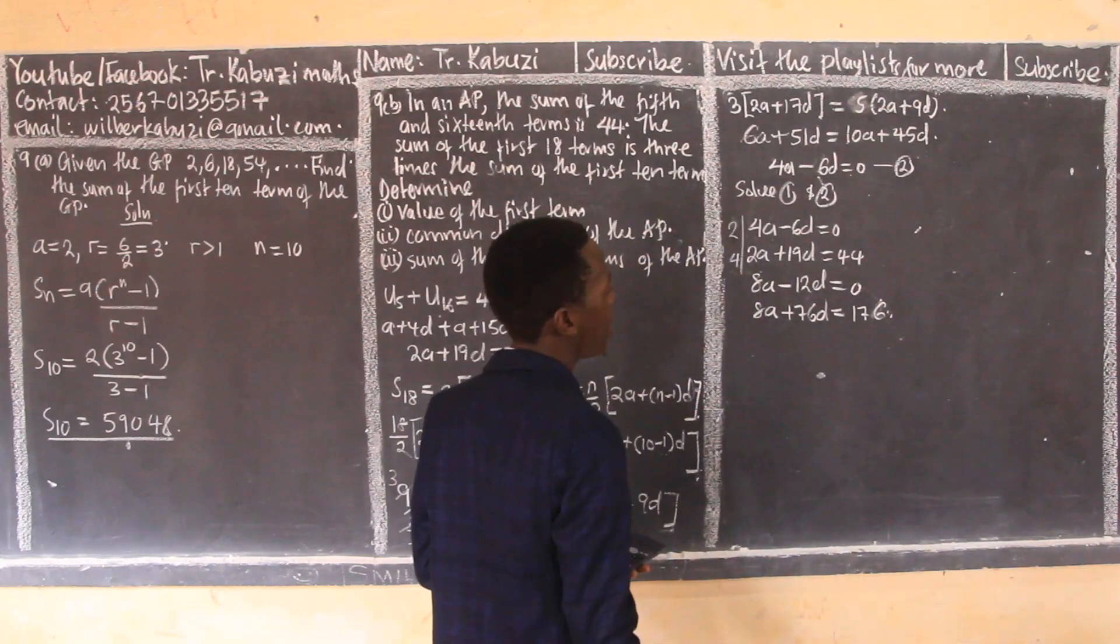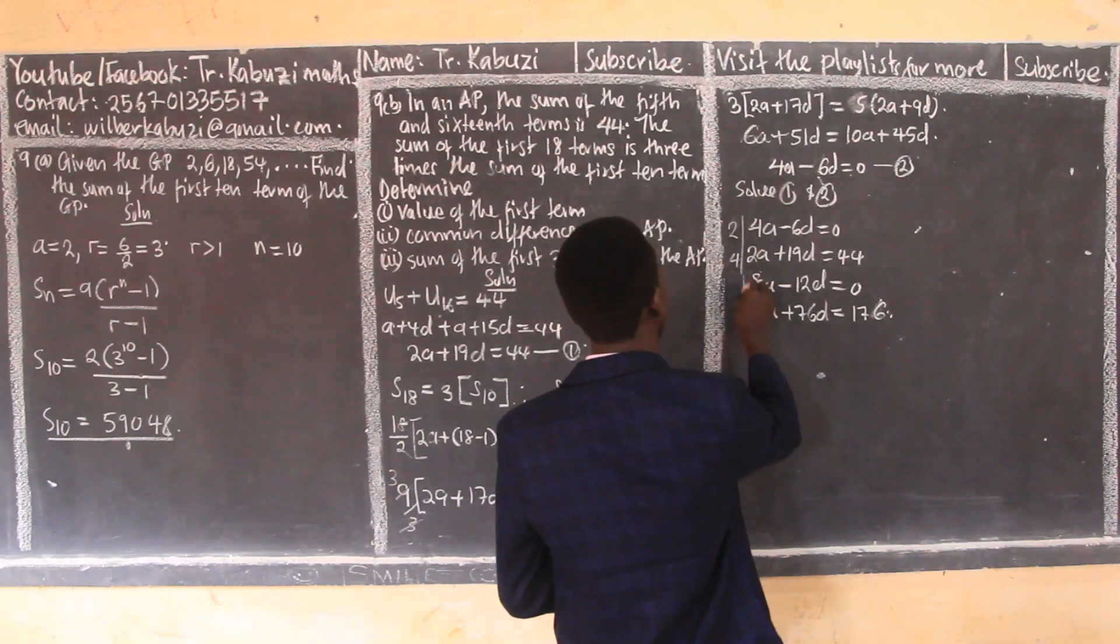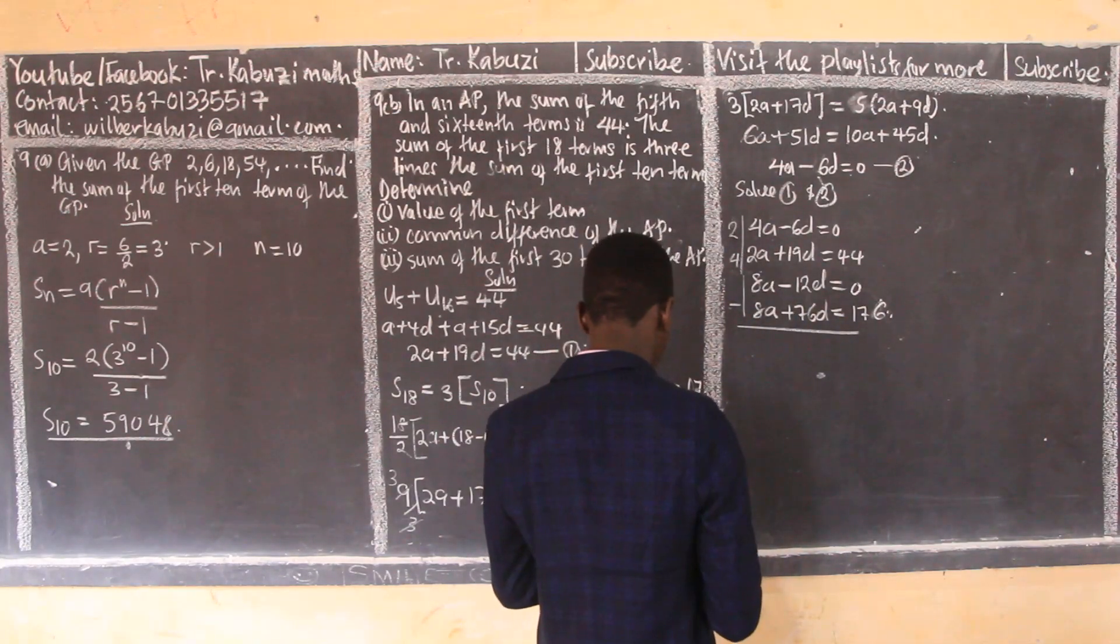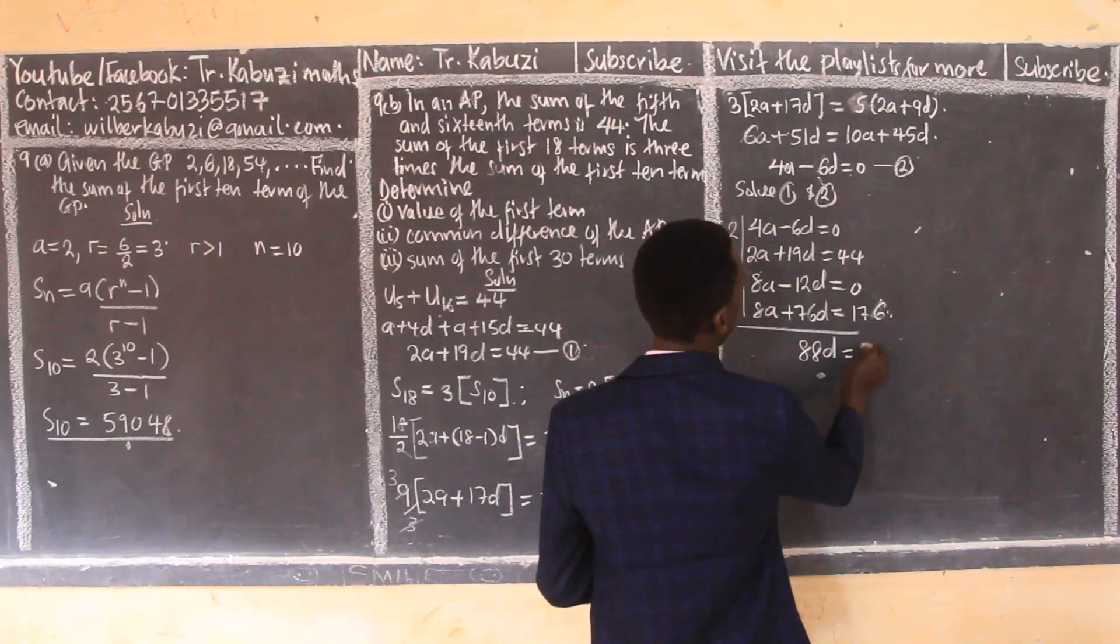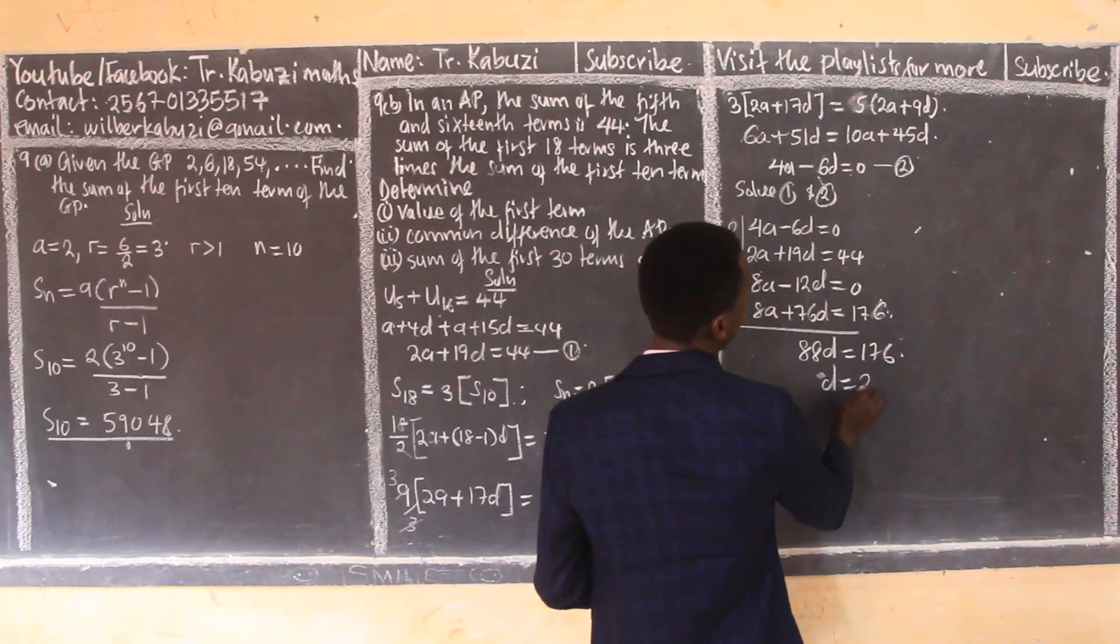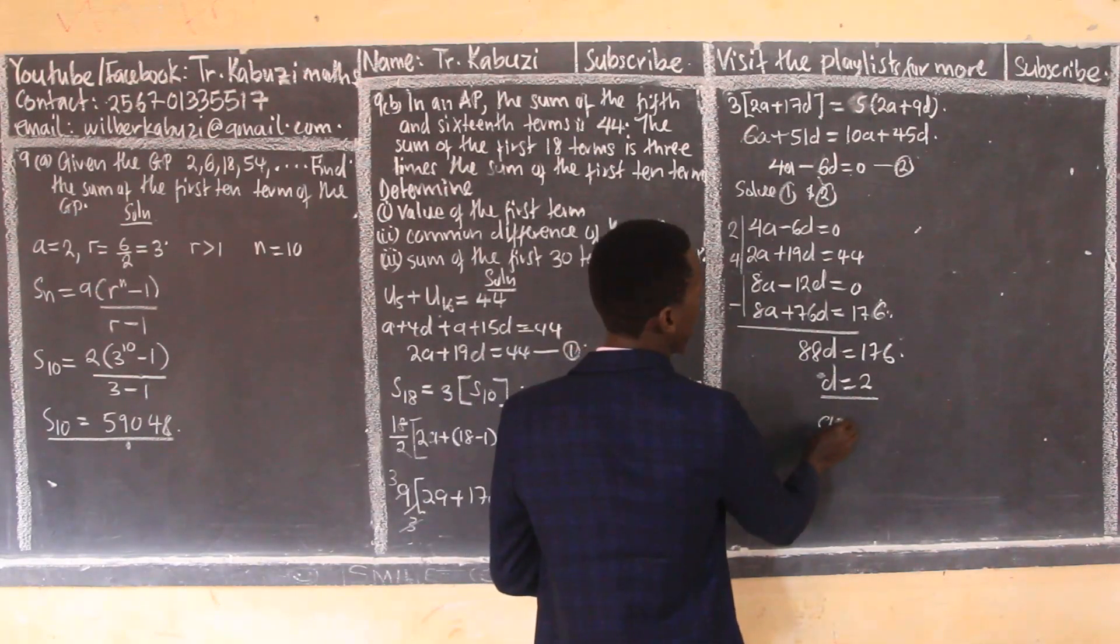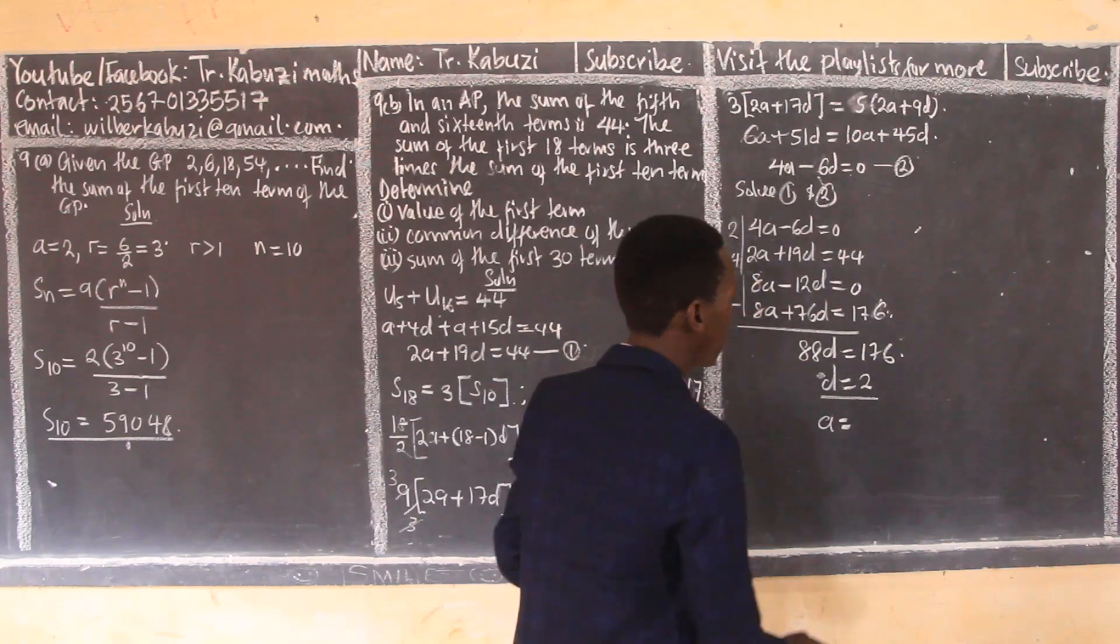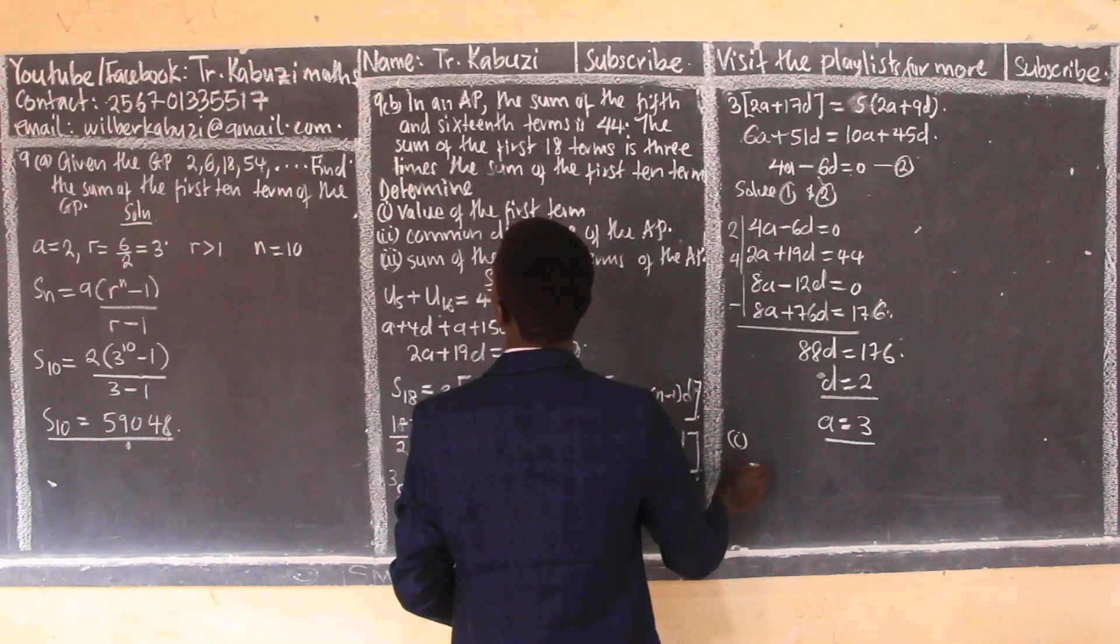From there, if I subtract these two, this will go. So I'll get 88d equals 176. So from there, my d I think is 2. So from there you can use any to get the value of a. And if you substitute d here as 2, we have 12 divided by 4, our a becomes 3.